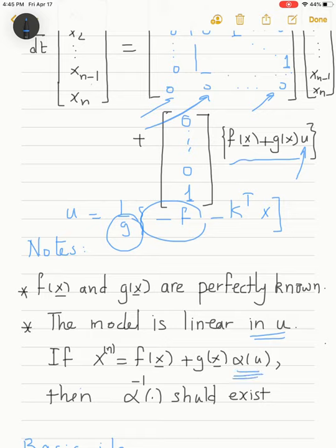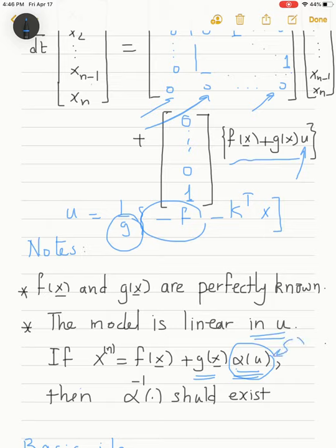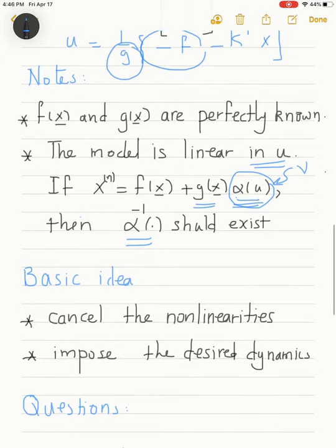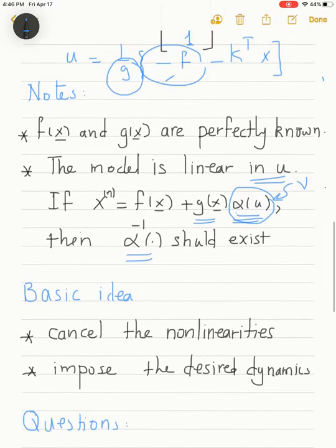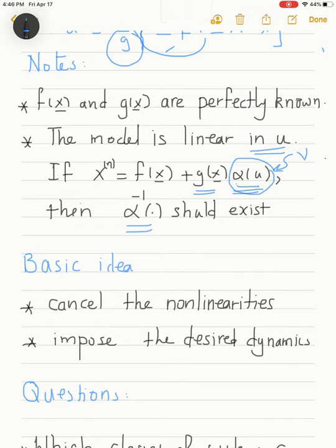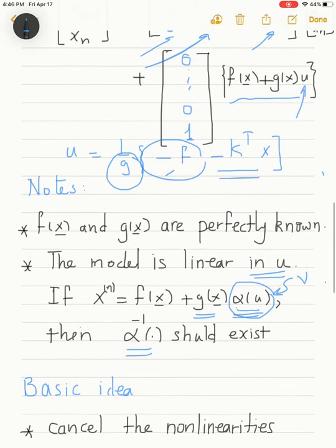The model assumes u appears linearly, but this is not strictly necessary — u could enter through a nonlinear function α(u), such that the nth derivative of x depends on nonlinear functions f, g, and α(u). This can also be handled, provided the inverse function α⁻¹ exists, so that once we compute an intermediate variable v, we can recover u using that inverse. The basic idea is to cancel nonlinearities and then impose desired dynamics via state feedback.